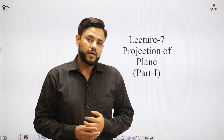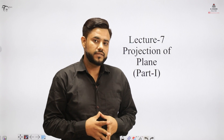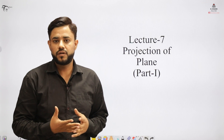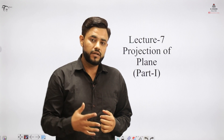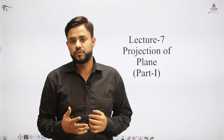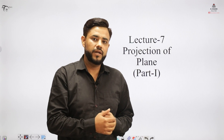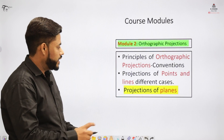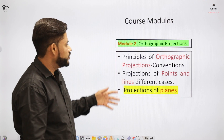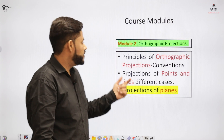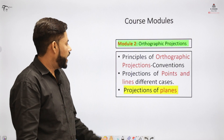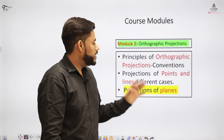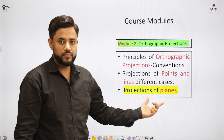In this concept, we would be learning about the situation in which the plane is inclined to both planes. In the previous concept, the line was inclined to both HP and VP. But here the plane would be inclined to both the horizontal plane and the vertical plane. We have already covered orthographic projection in module two, and projection of points and lines in previous lectures. Now in this lecture, we will be covering projection of planes.